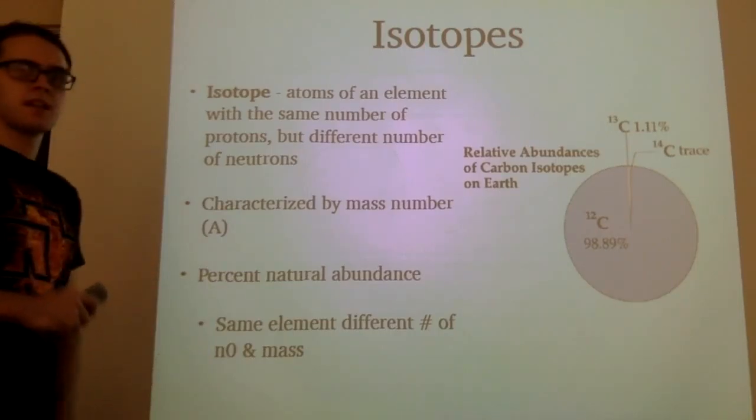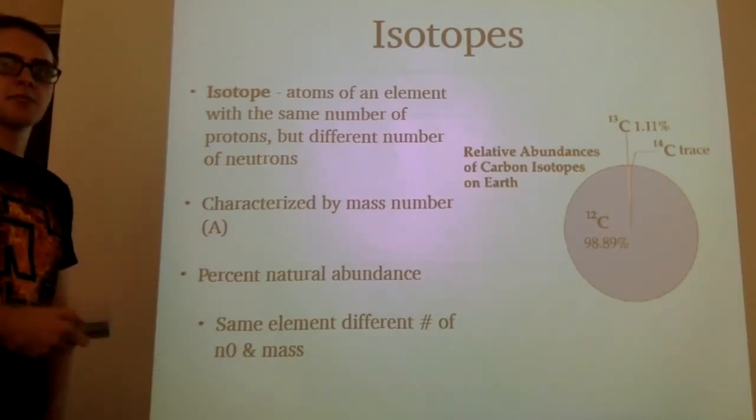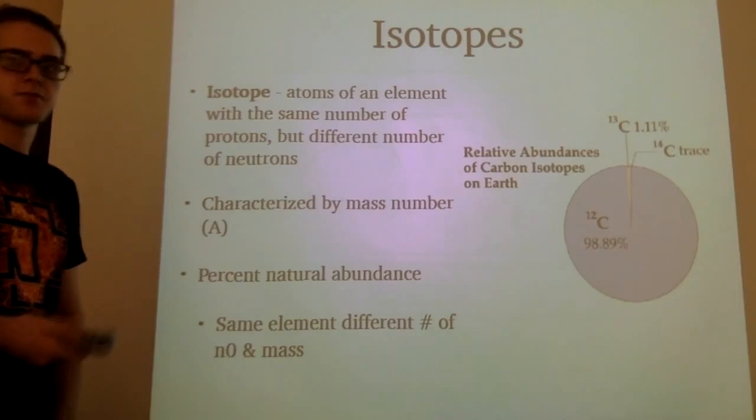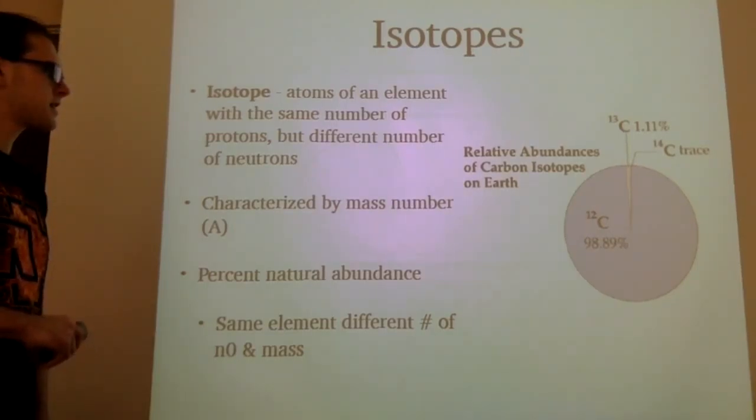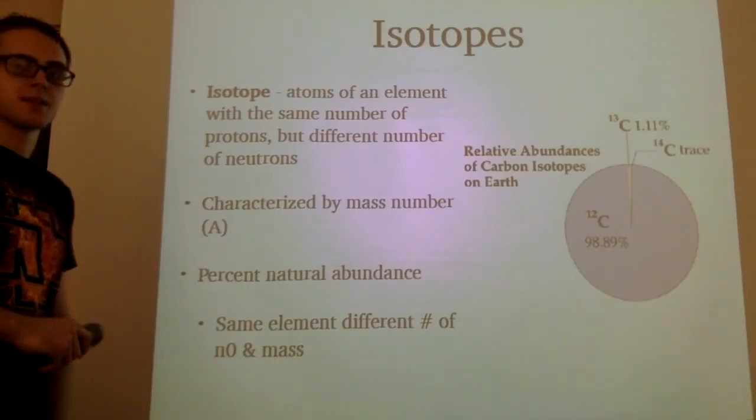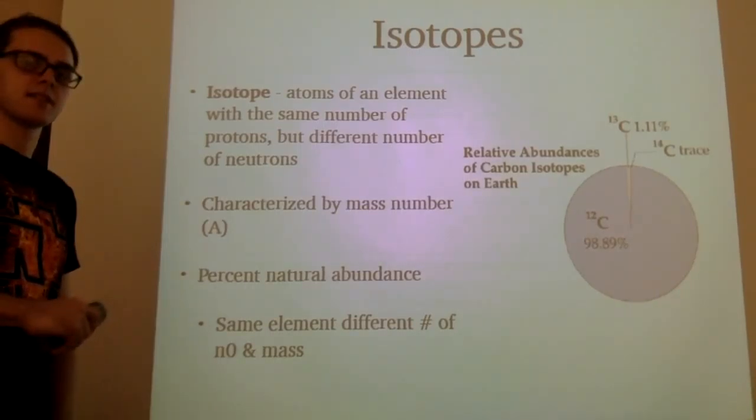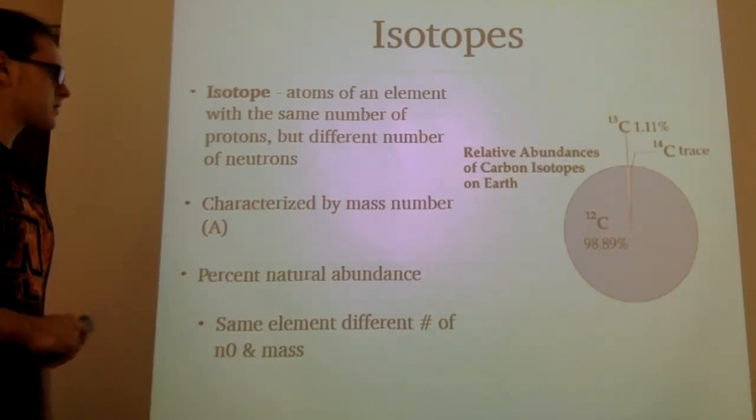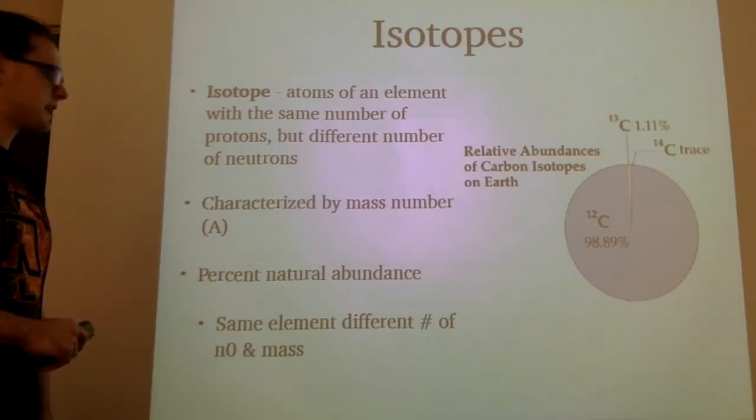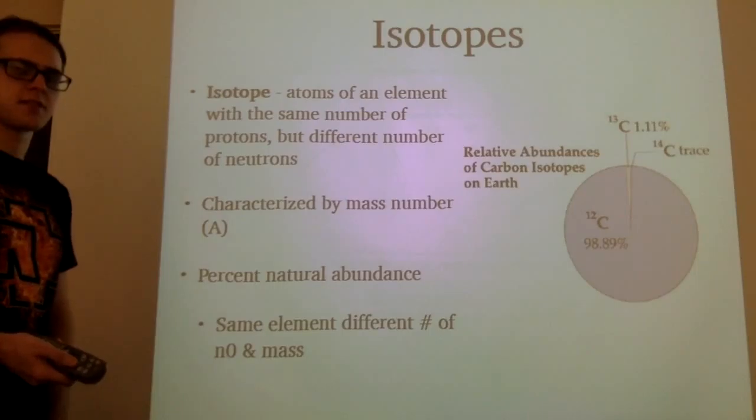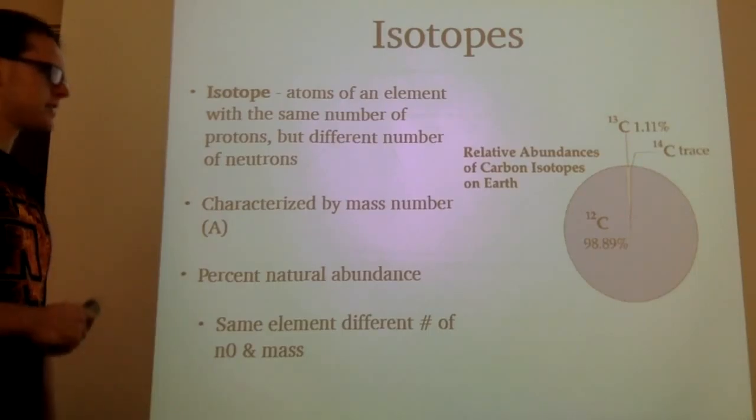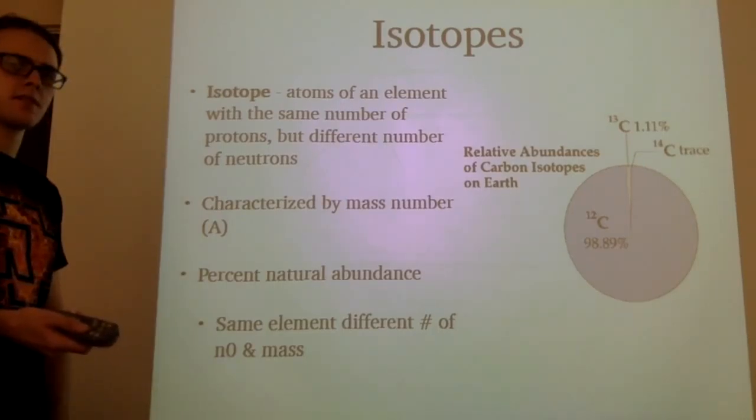An isotope is atoms of an element with the same number of protons but different number of neutrons, and this is characterized by its mass number. As we saw, each element comes in several different flavors. So how do we determine the amount of each flavor?